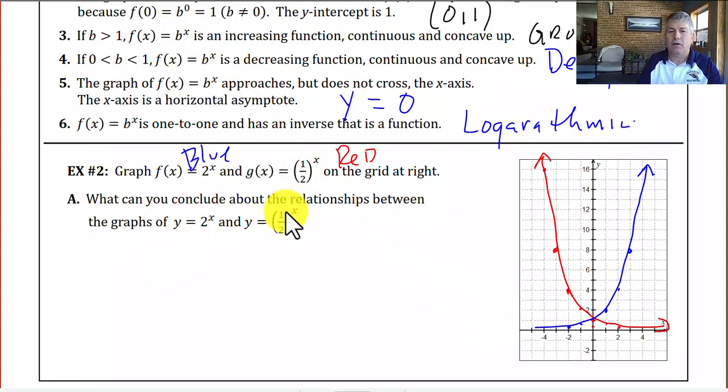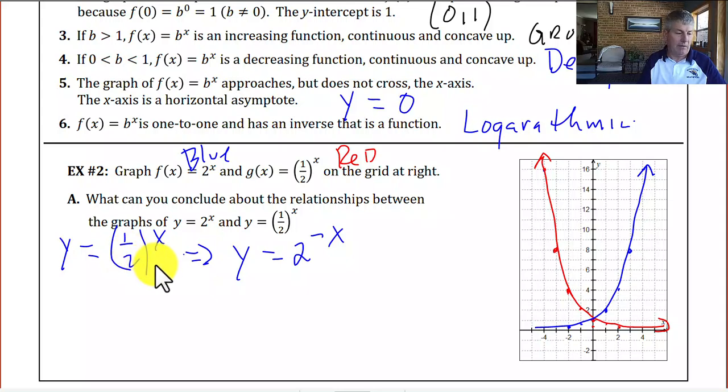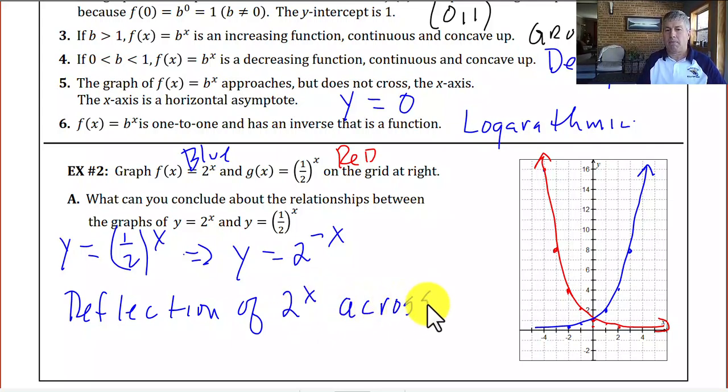So what can we conclude about those? Well, y equals 1 half raised to the x is also the same as y equals 2 raised to the negative x, because a negative exponent is a fraction. So that would change our base. It is a reflection of 2 to the x across the y-axis.